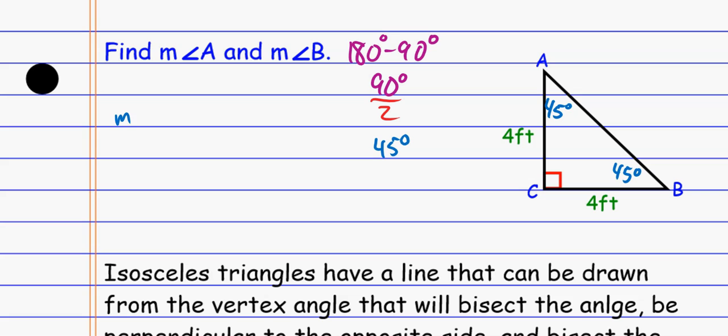So the measure of angle A is 45 degrees, and the measure of angle B is also 45 degrees.